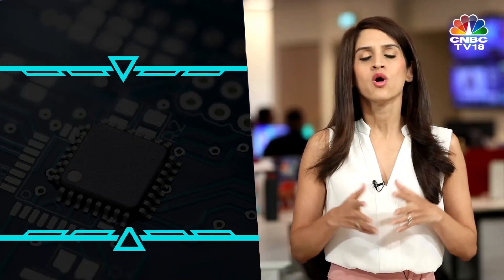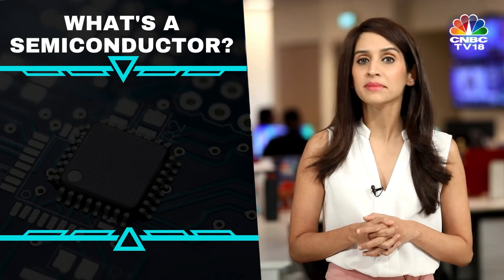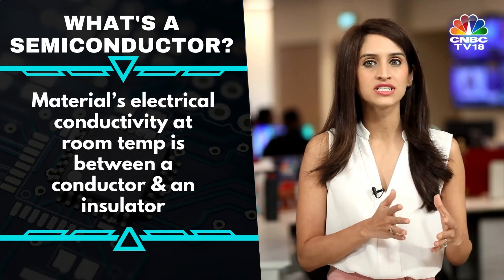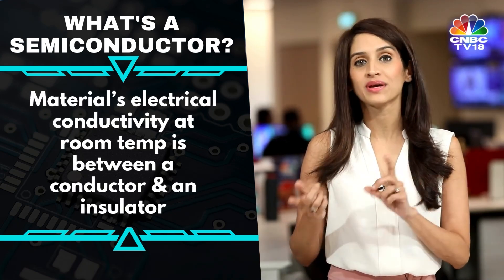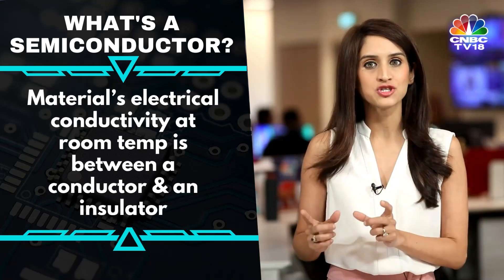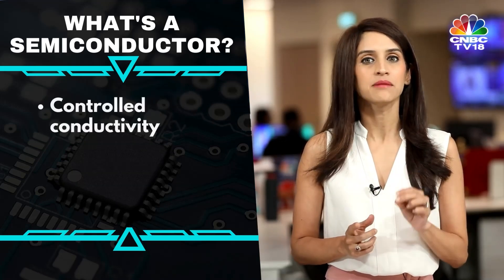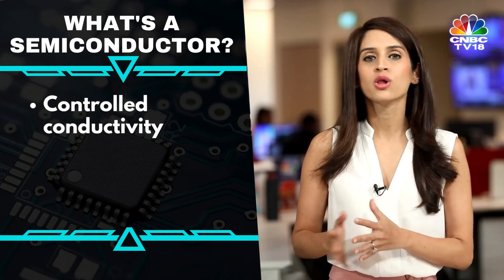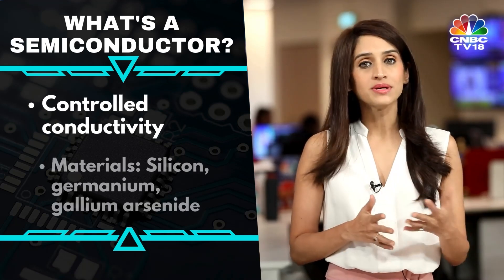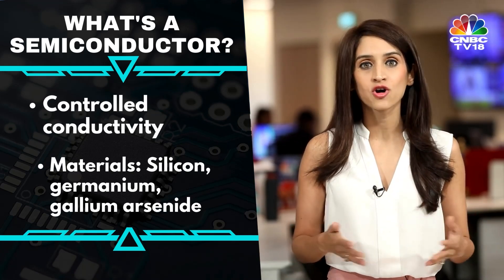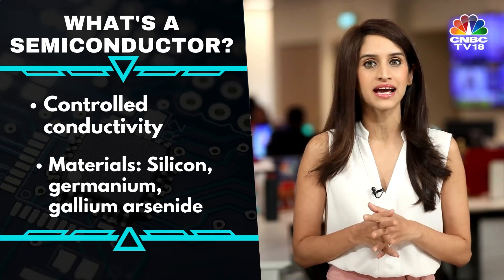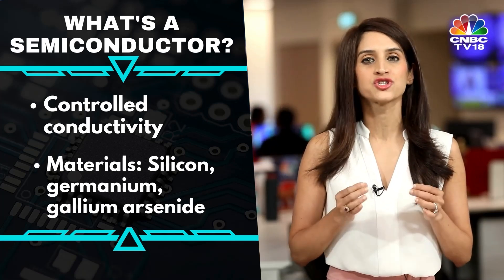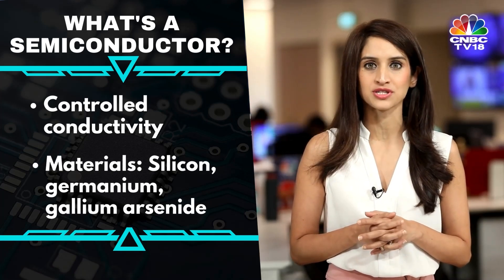Let's start with the basics. What is a semiconductor? A semiconductor is a material whose electrical conductivity at dual temperature is between that of a conductor and insulator. Its conductivity can be controlled, ranging from an insulator all the way to a conductor. Common semiconductor materials include silicon, germanium, gallium arsenide, etc. But silicon is the most influential one in commercial applications.